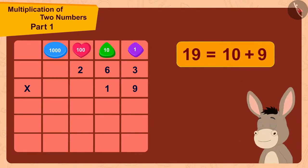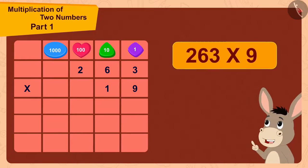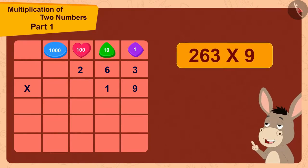I can write 19 by adding 10 and 9. So, first I will multiply 263 with 9. Then I will multiply 263 with 10.